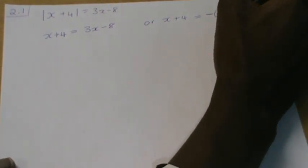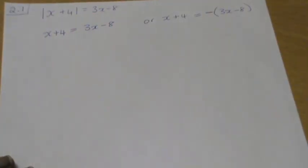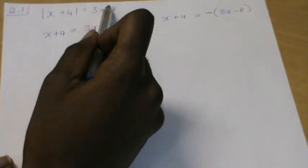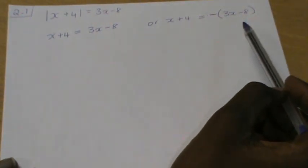Or, x plus 4 is equal to the negative of 3x minus 8. Okay, so that's how we do it. It's either the positive value of this one, the negative value of that one.